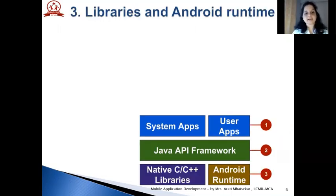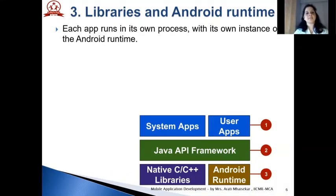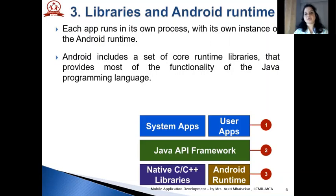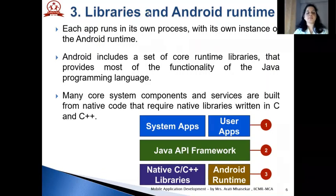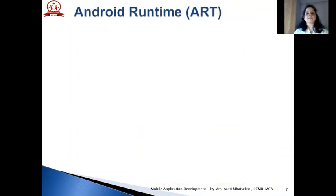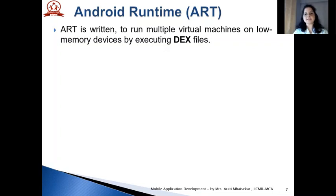The third layer in the stack is libraries and Android Runtime. Each app runs in its own process with its own instance of the Android Runtime. Android includes a set of core runtime libraries that provides most of the functionality of the Java programming language. These native libraries are available to apps through the Java API framework. Android Runtime, ART, is written to run multiple virtual machines on low memory devices by executing DEX files. The full form of DEX is Dalvik Executables.